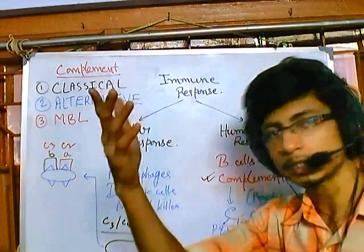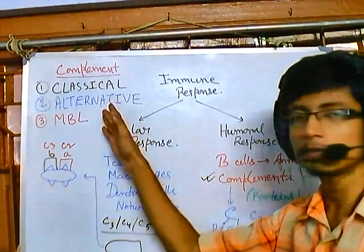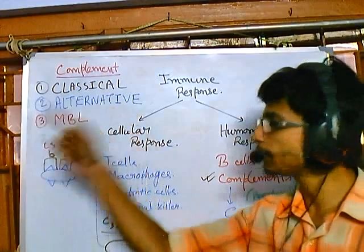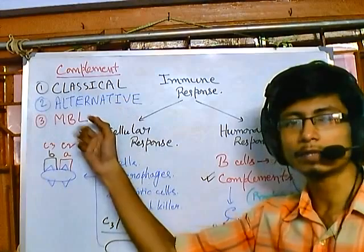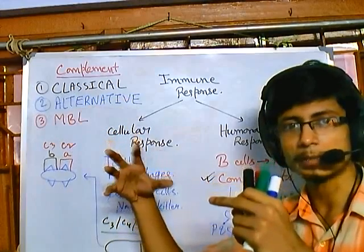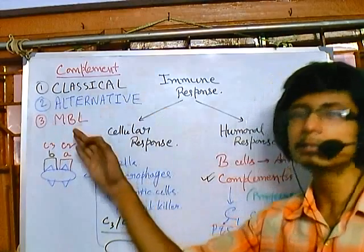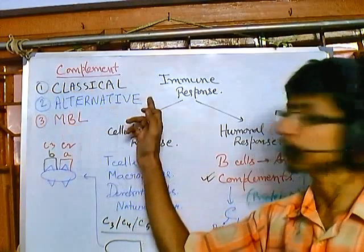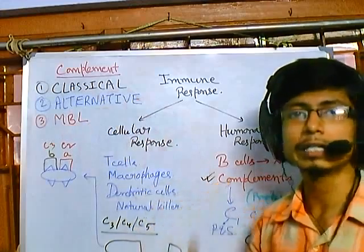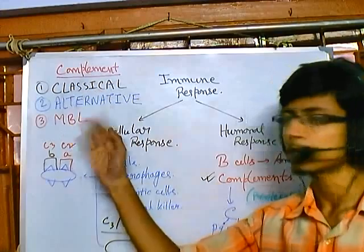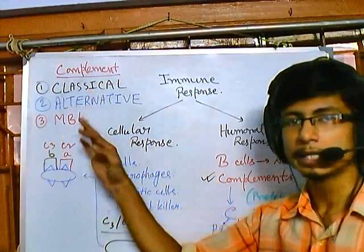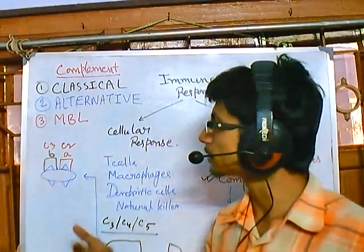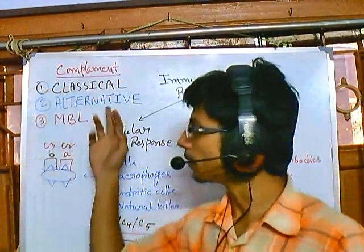The MBL pathway resembles the sequence of the classical pathway, so we can learn both together. The alternative pathway will be harder to learn than the classical and MBL pathways. We will first discuss the classical pathway along with the MBL pathway, and then talk about the alternative pathway. Thank you.